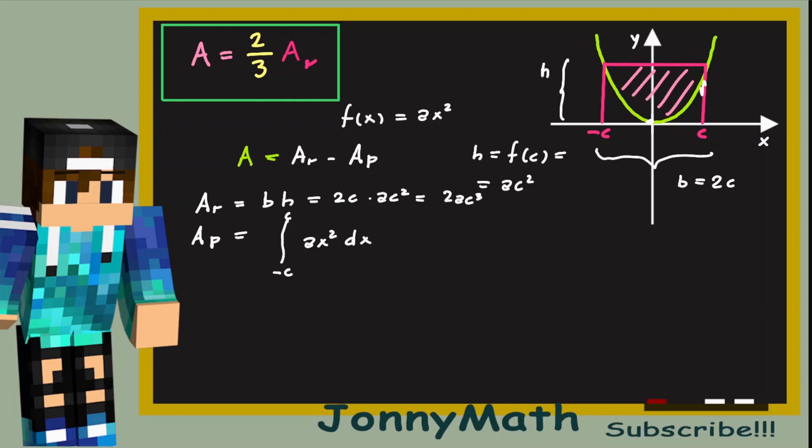And since this area here is equal to this, we can write it as 2 times the integral from 0 to c of ax squared dx. Just to simplify our integral and make things easier. But they're equal, so they're the same thing. And we can do it because the function of a parabola is symmetric with respect to the y-axis.